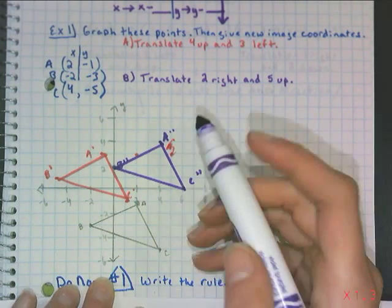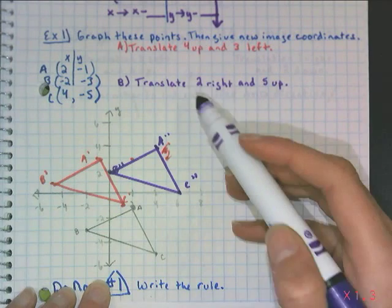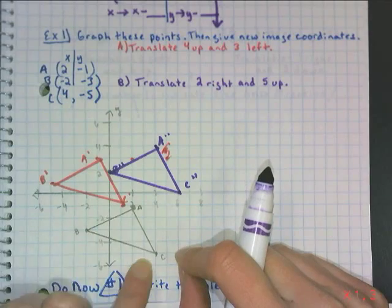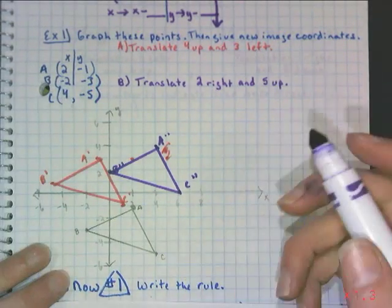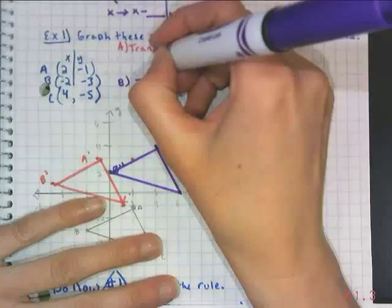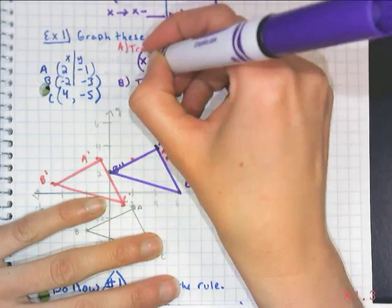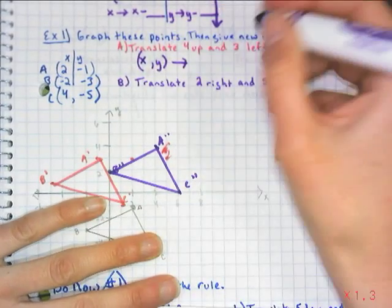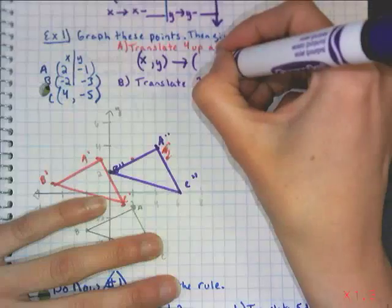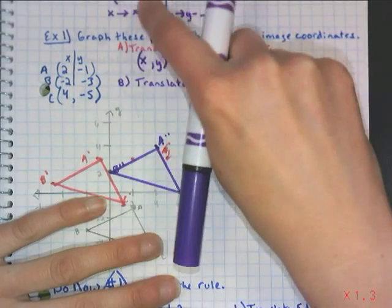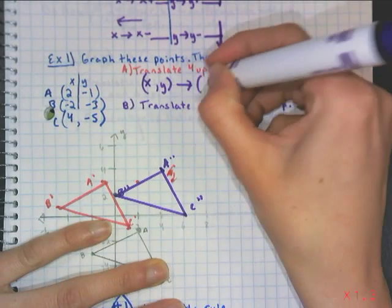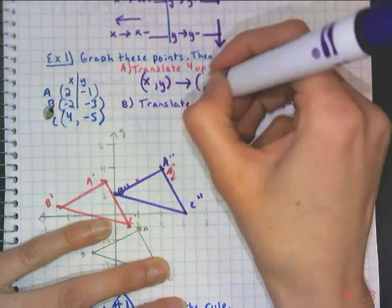Instead of graphing every time — and risking a miscount — we can think about what we do to the original coordinates to get the new ones. Translating 4 up means we add to Y. Translating 3 left means we subtract from X. So the rule is (X − 3, Y + 4).